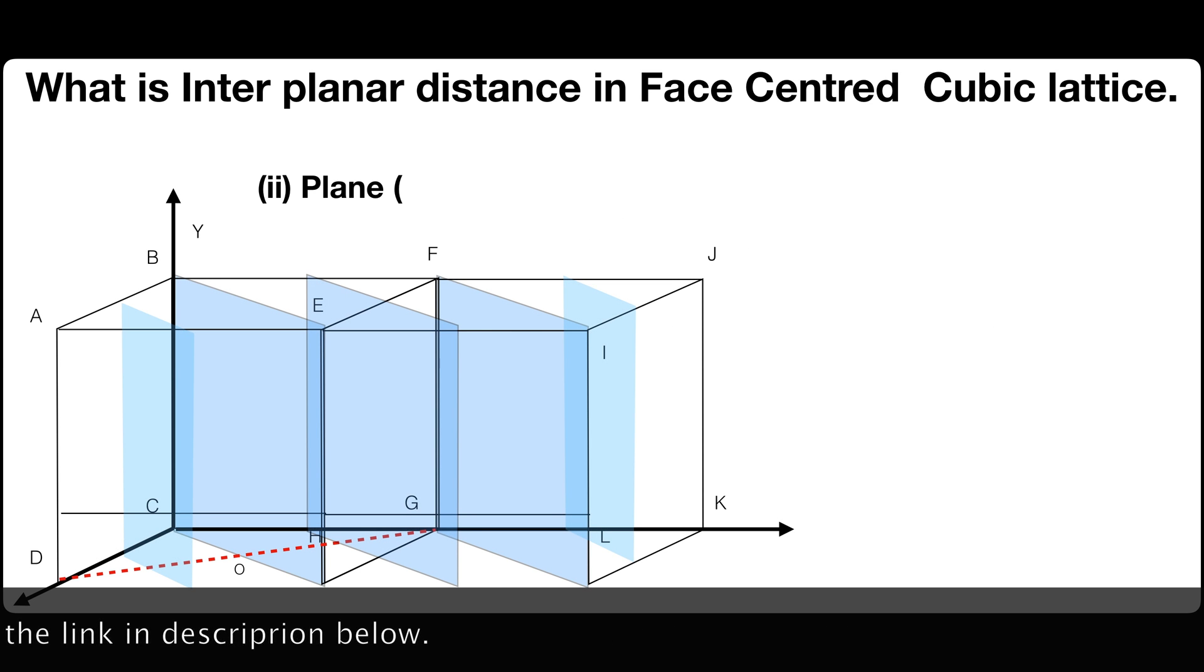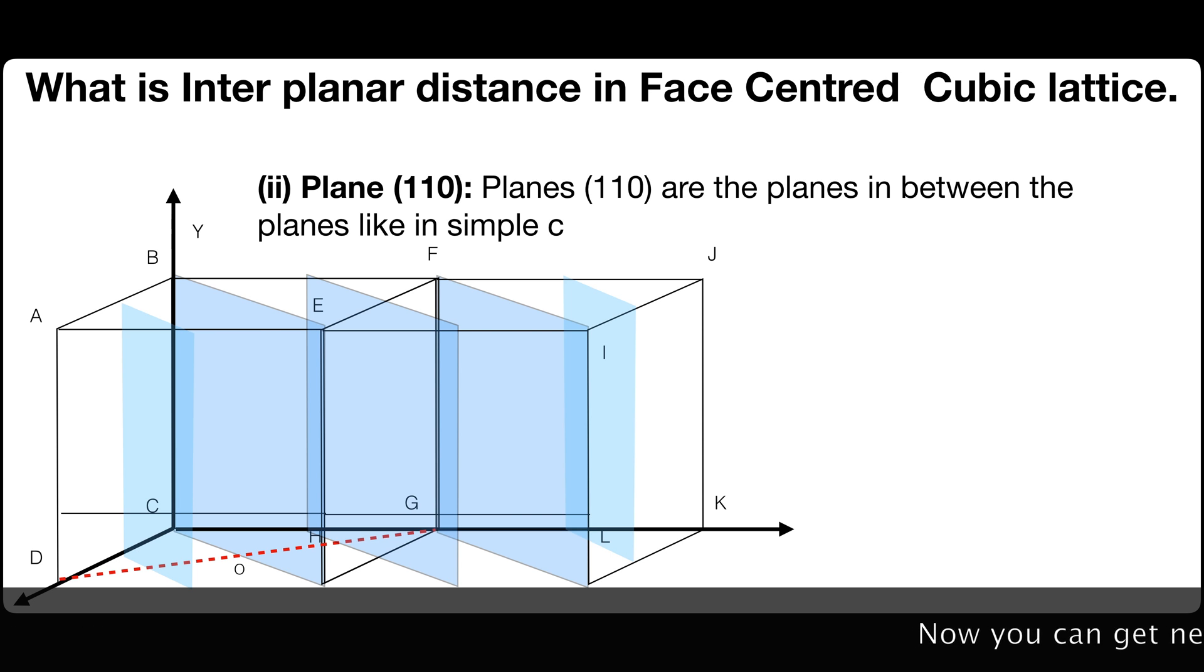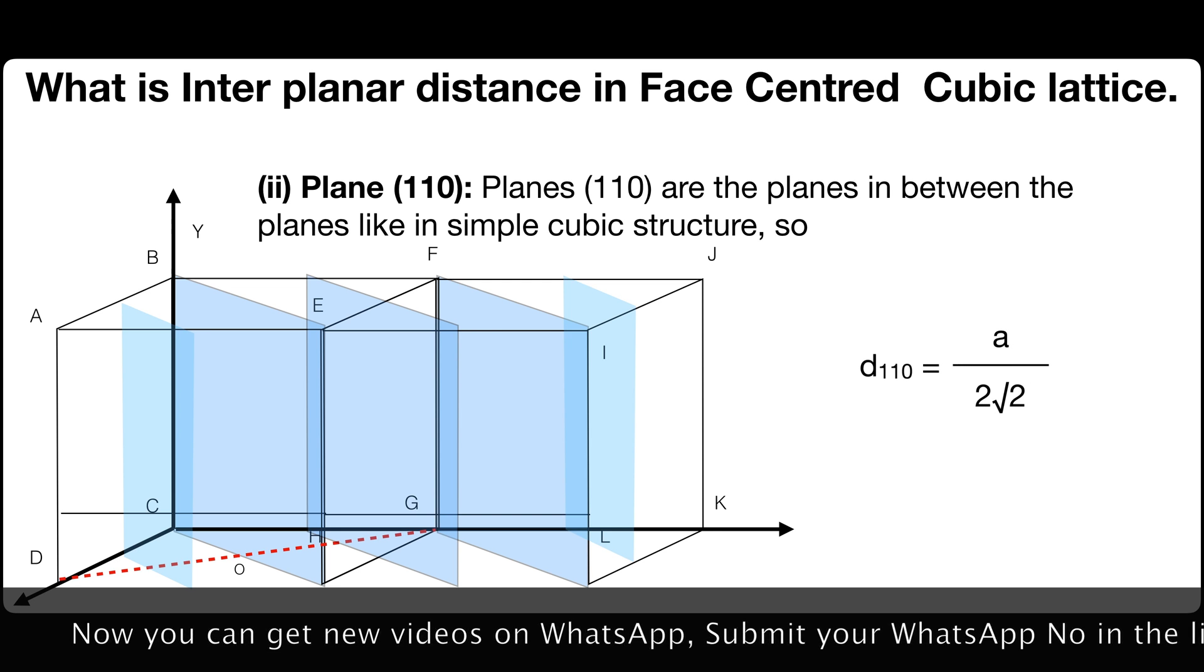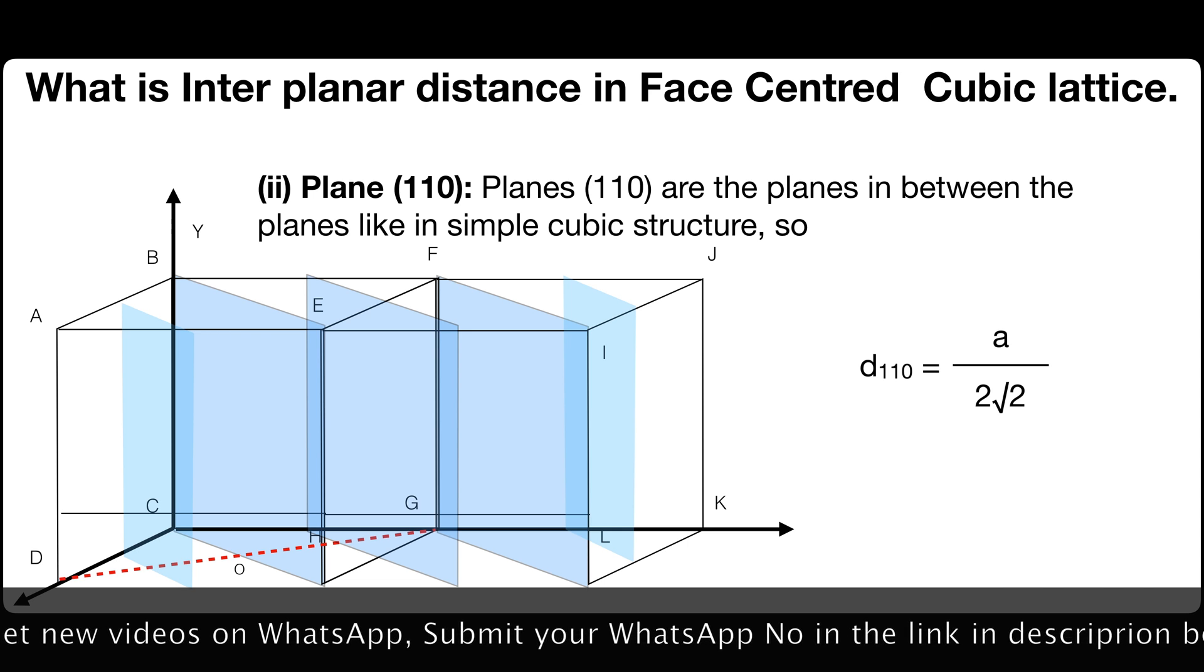Second plane 110. Planes 110 are the planes in between the planes like in simple cubic structure, so d110 equals a by 2 square root of 2. You can find more information about the interplanar distances of simple cubic structure in the previous video.